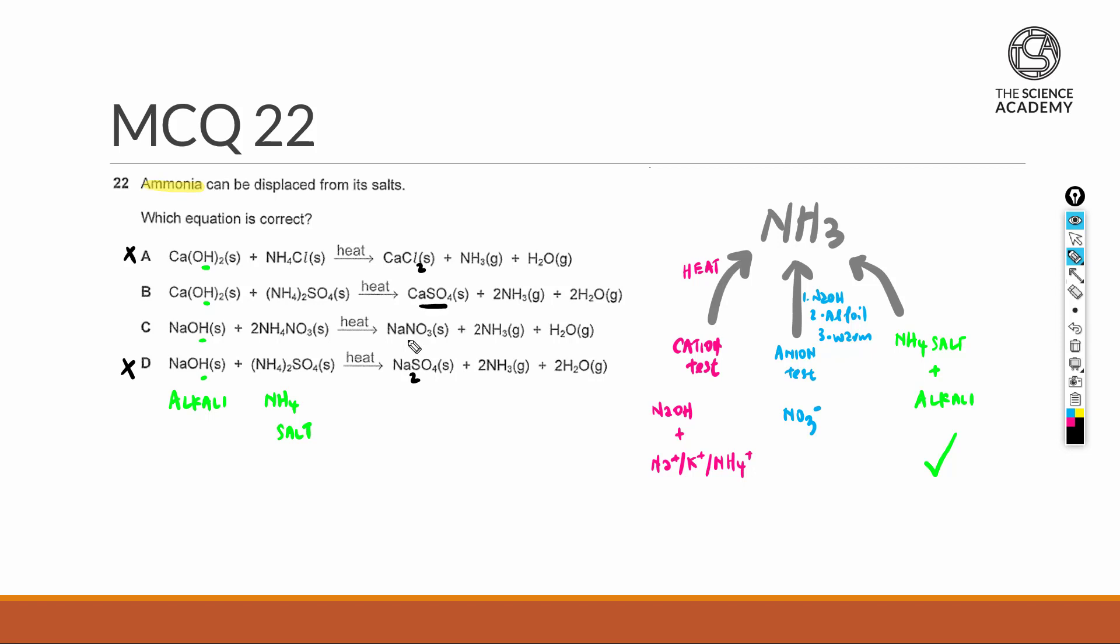The last check is calcium sulfate and sodium nitrate. They have the formulas correct, but in terms of solubility, calcium sulfate is an insoluble sulfate salt, whereas sodium nitrate should be aqueous because all sodium and nitrates are soluble. So the answer for this question is B.